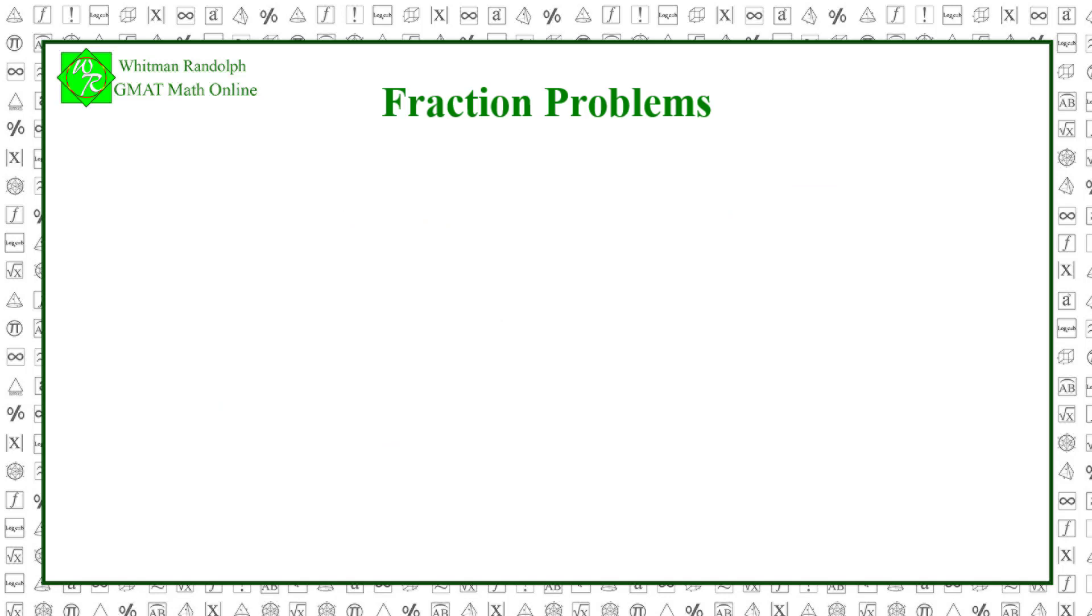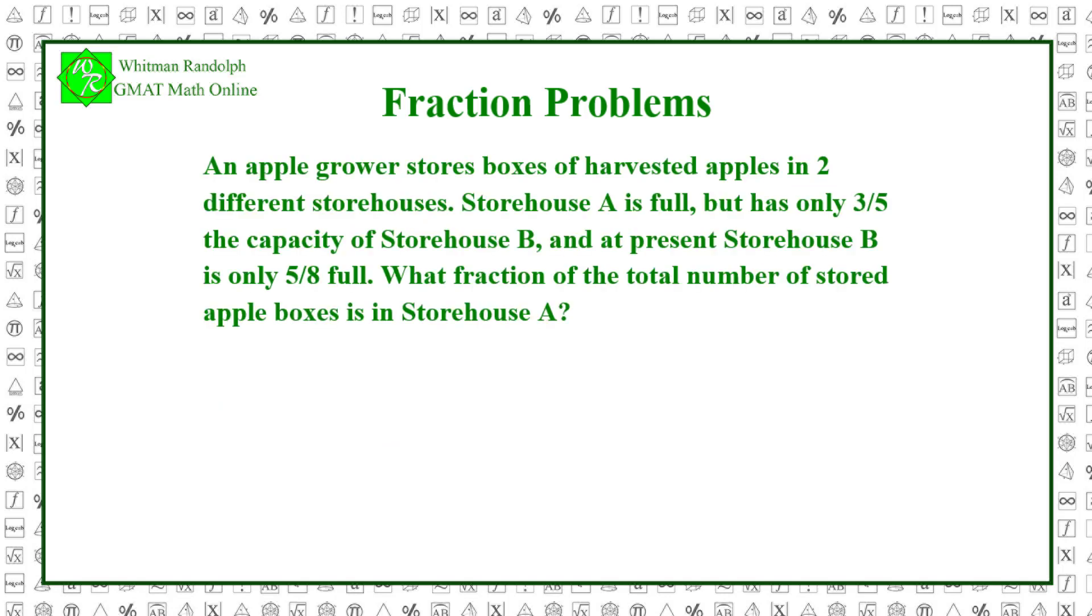And here's a final problem. An apple grower stores boxes of harvested apples in two different storehouses. Storehouse A is full, but has only three-fifths the capacity of storehouse B. And at present, storehouse B is only five-eighths full. What fraction of the total number of stored apple boxes is in storehouse A?